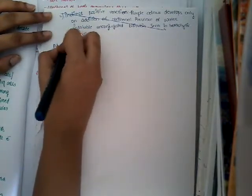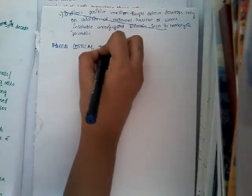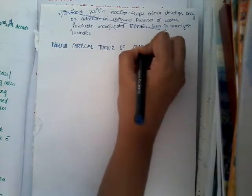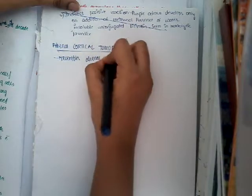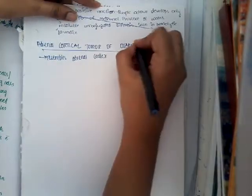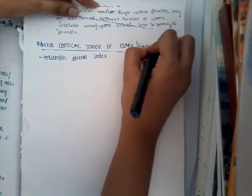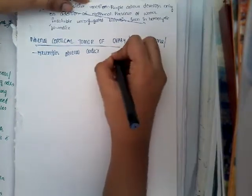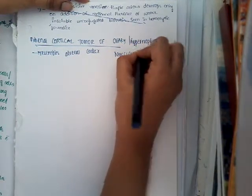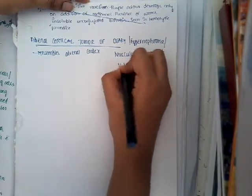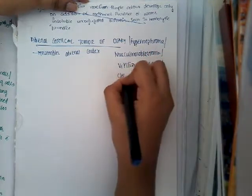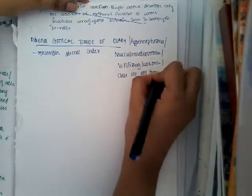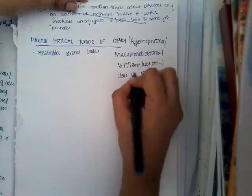Another virilizing tumor of the ovary is the adrenal cortical tumor of the ovary. As the name suggests, it resembles the adrenal cortex. It is also called hypernephroma, masculinoblastoma, virilizing luteoma, or clear cell tumor of the ovary.